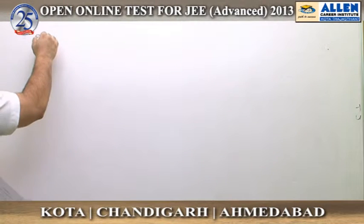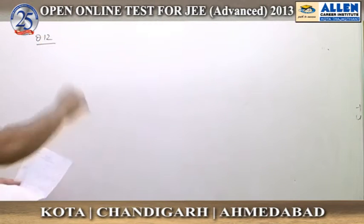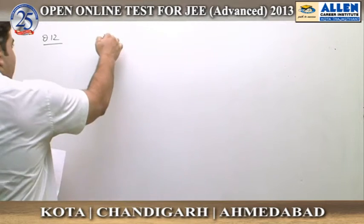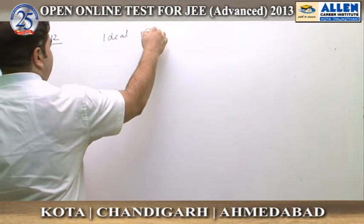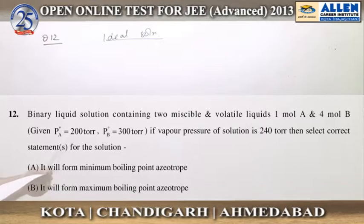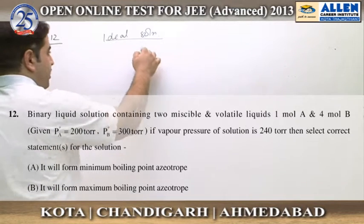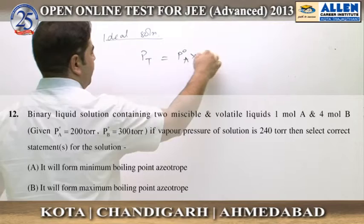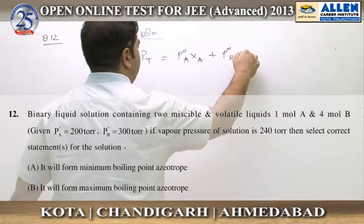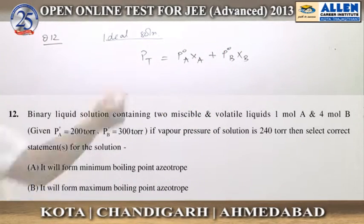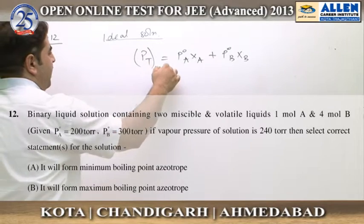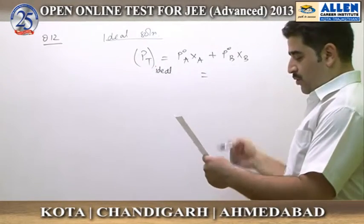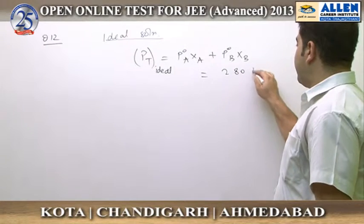Question number 12 is based upon a solution of two volatile liquids. We know that if our solution is an ideal solution, we can apply Raoult's law, according to which total pressure is equal to the sum of the vapour pressure of A and vapour pressure of B. This gives us a total ideal pressure equal to 280 torr.